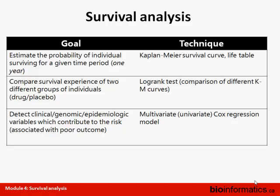Another goal can be to detect clinical, genomic, or epidemiologic variables which contribute to risk and are associated with poor prognosis. There may be multiple variables you want to take into account, and for that kind of analysis we use the multivariate Cox regression model, which tries to estimate the relative risk of poor outcome taking multiple variables into consideration.